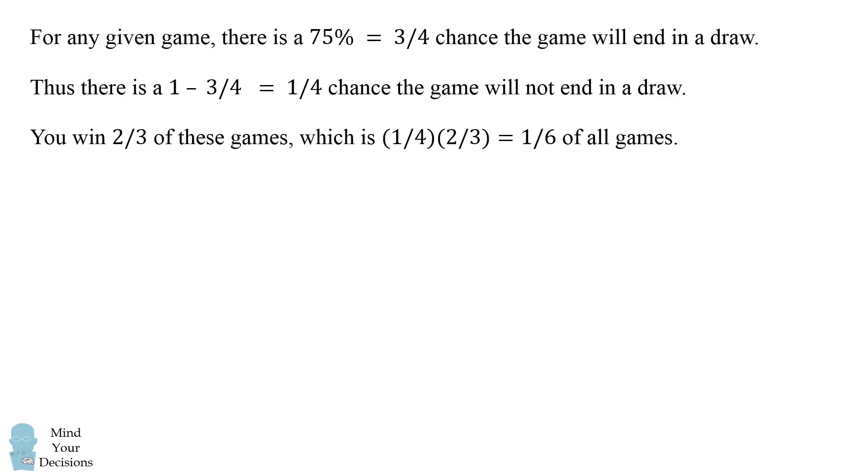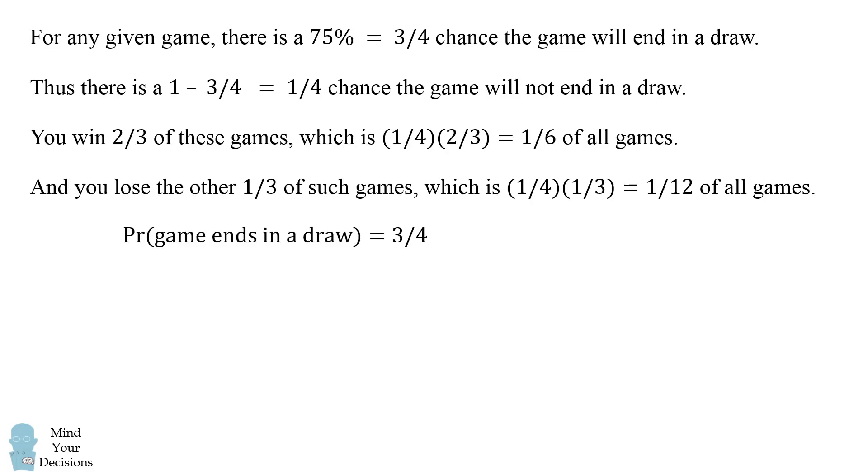You win two-thirds of these games, which is one-fourth times two-thirds which equals one-sixth of all games. Similarly, you lose the other one-third of such games, which is one-fourth times one-third which equals one-twelfth of all games. So the probability a particular game ends in a draw is 3 over 4. The probability a particular game ends in a win for you is 1 over 6. And the probability a particular game ends in a loss is 1 over 12.